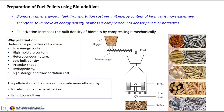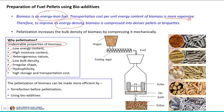Let us first discuss about the physical process — palletization. Since biomass is an energy-lean fuel, the transportation cost per unit energy content is more expensive. To improve its energy density, biomass is compressed into denser pellets or briquettes. The palletization process increases the bulk density of biomass by compressing it mechanically. It converts the undesirable properties of biomass — such as low energy content, high moisture content, heterogeneous nature, low bulk density, irregular shape, hydrophobicity, and high storage and transportation cost — to desirable properties.